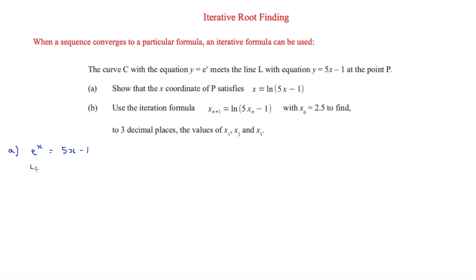Now we take ln of both sides. This will cancel the e, giving ln(e^x) = ln(5x - 1), which simplifies to x = ln(5x - 1).